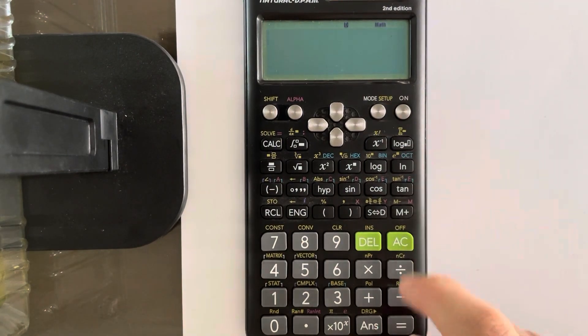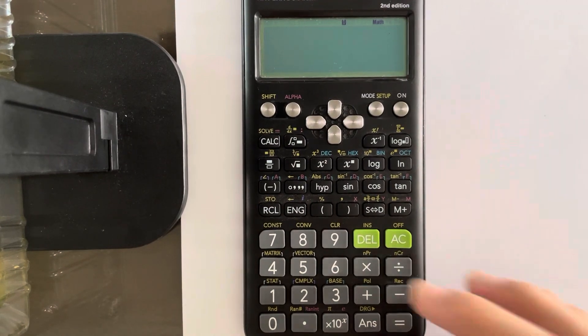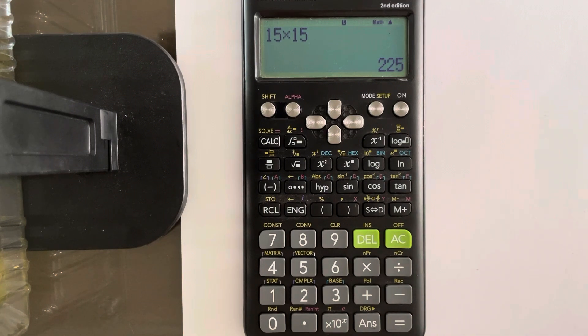So what we just did is normally when you just turn it on and you press AC, nothing will happen. AC is actually used to reset your calculator. For example, 15 times 12, 15 times 15. And if you want to restart and write something new, you just press AC and it starts from refresh.